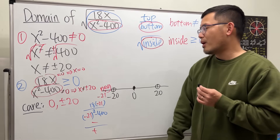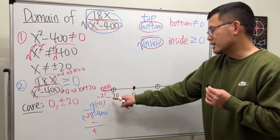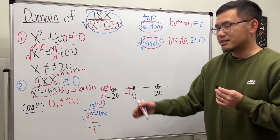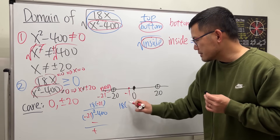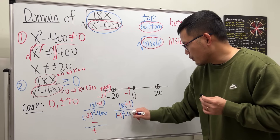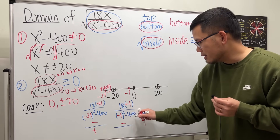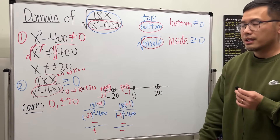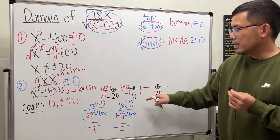Now pick a number between negative 20 and zero, say negative 1. The top is 18 times negative 1, which is negative. The bottom is negative 1 squared minus 400, which is 1 minus 400, definitely negative. Negative over negative gives positive — this interval works.